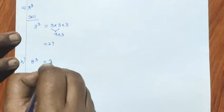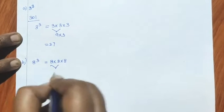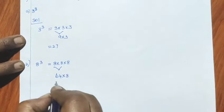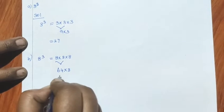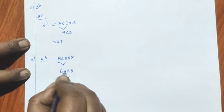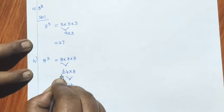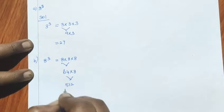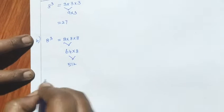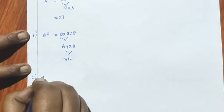8 into 8: 8 eights are 64. 64 into 8 — what is the number? 512. 8 fours are 32, remaining 3; 6 eights are 48, 48 plus 3 is 51. So 512.